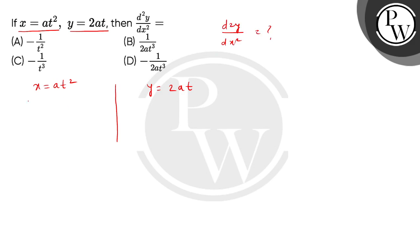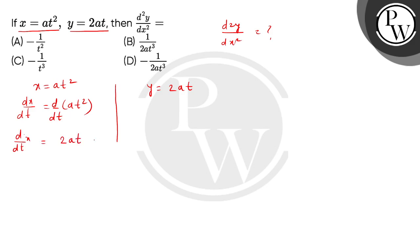So first of all, find करेंगे हम the first order derivative of x with respect to t. So this is equals to d/dt of at square, तो यहां से हमें dx/dt का answer मिल जाएगा: 2at. इसको मान लेंगे equation number 1.